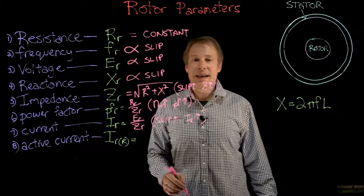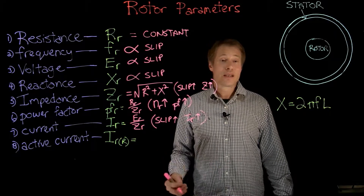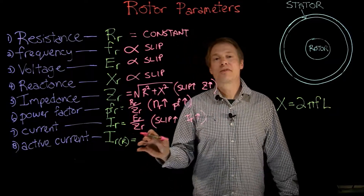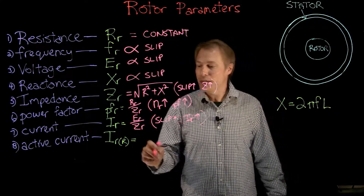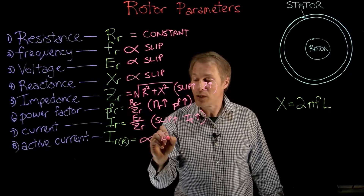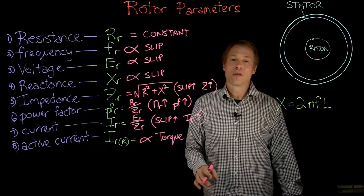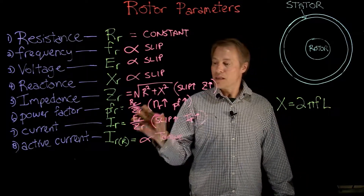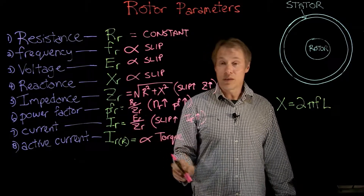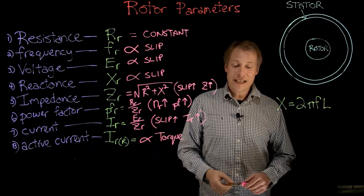The last parameter is active current, also known as resistive current, in-phase current, or horizontal current. The main characteristic to focus on here is that active current is almost directly proportional to torque. It's not the total rotor current but the in-phase or horizontal component of current that is proportional to torque. We'll see you in the next video.